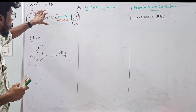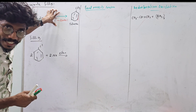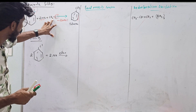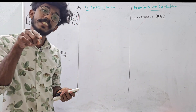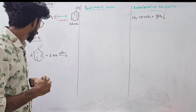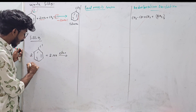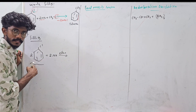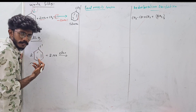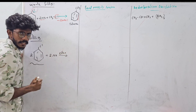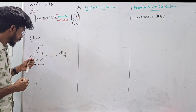This is a Wurtz-Fittig reaction. One is an aryl or alkyl halide. You can use aryl or alkyl. This reaction is a Wurtz-Fittig reaction; this reaction is a Fittig reaction. You can use aryl or alkyl. For example, if you use bromine, you can use chlorine — it's dry, in a dry presence.